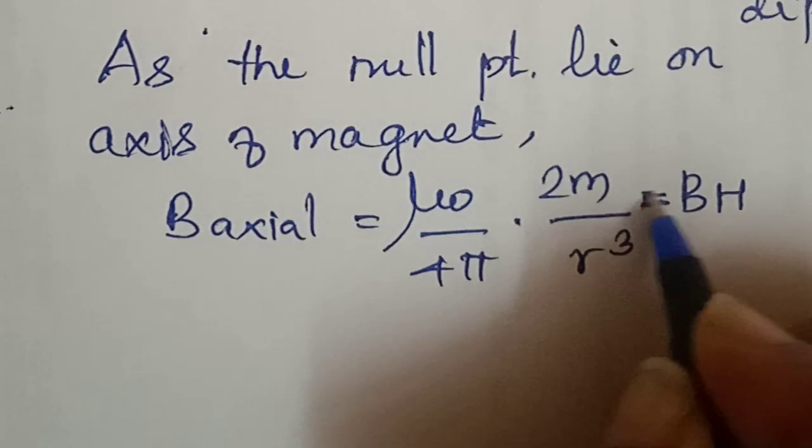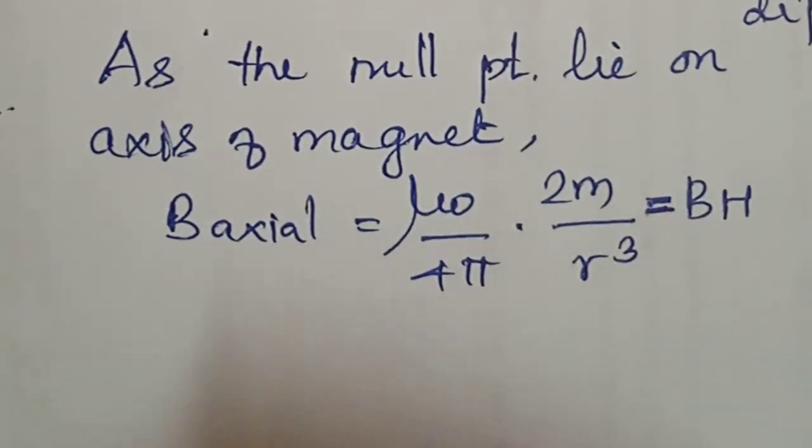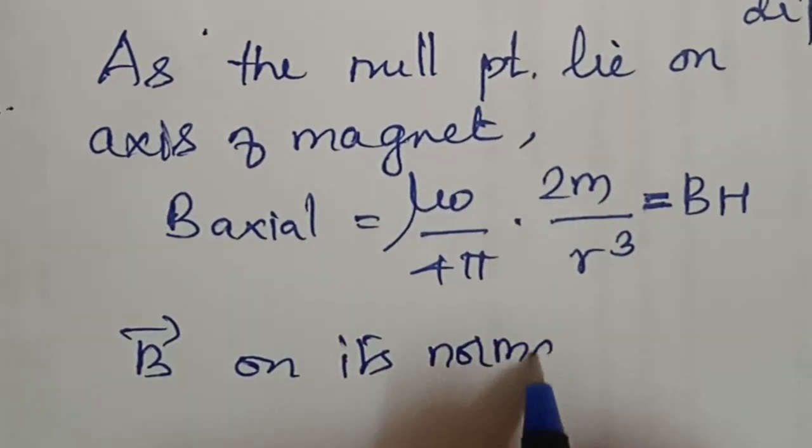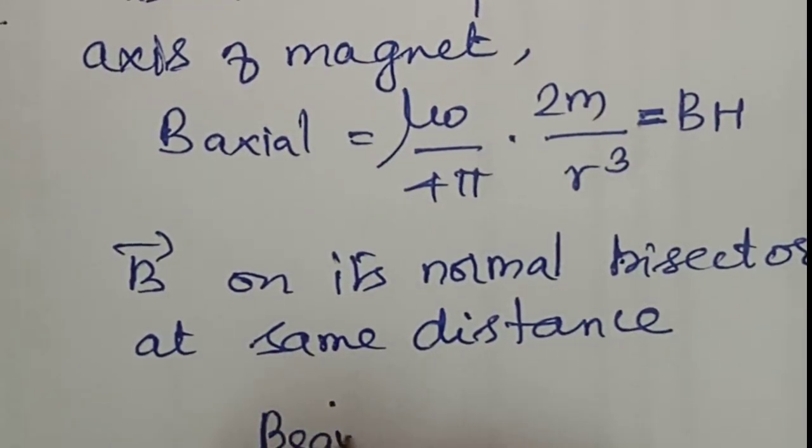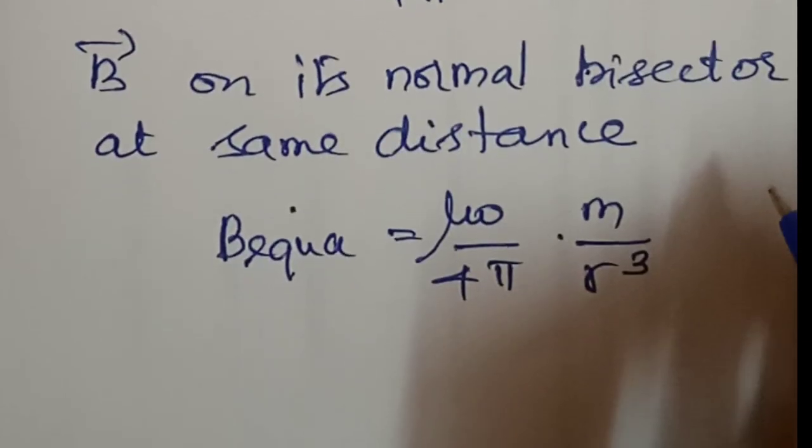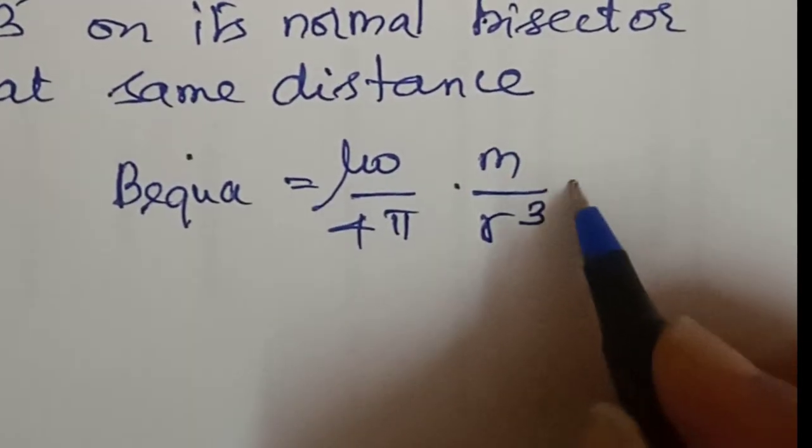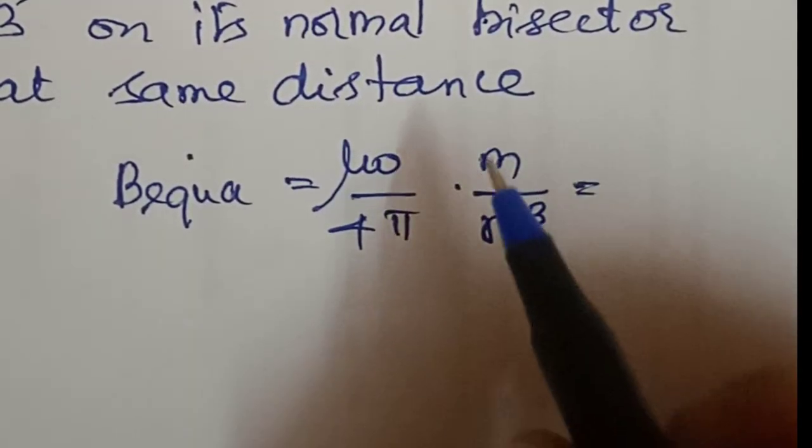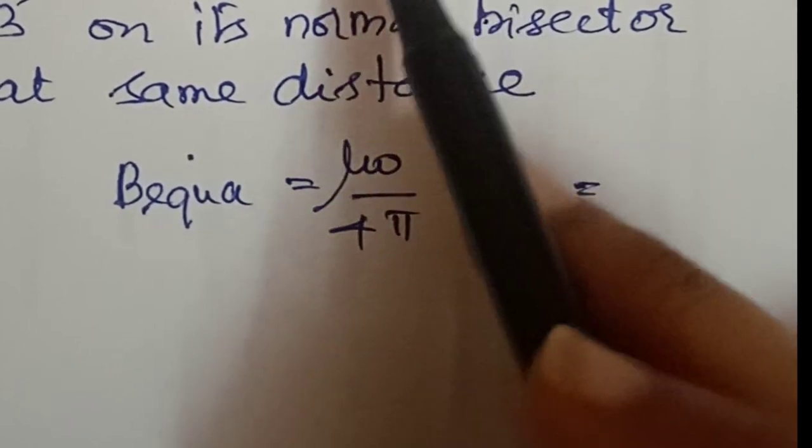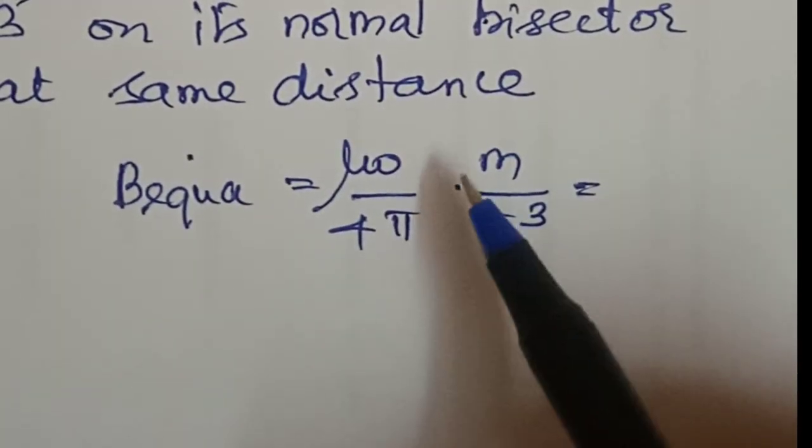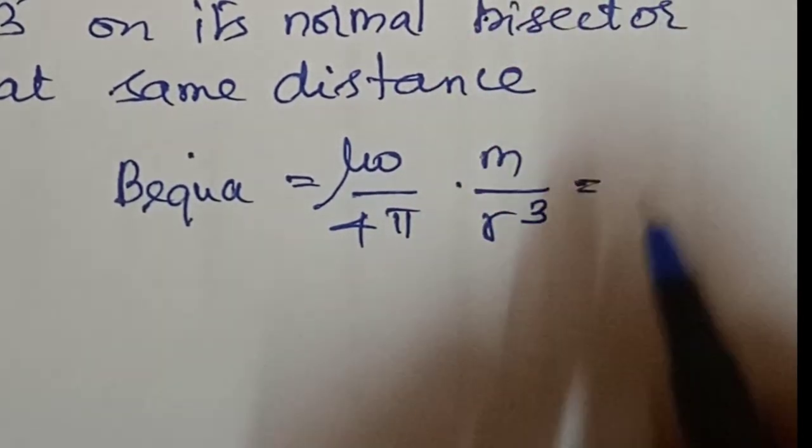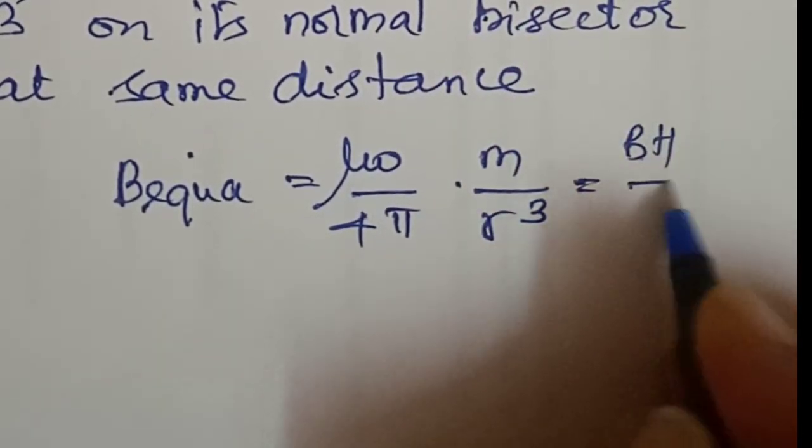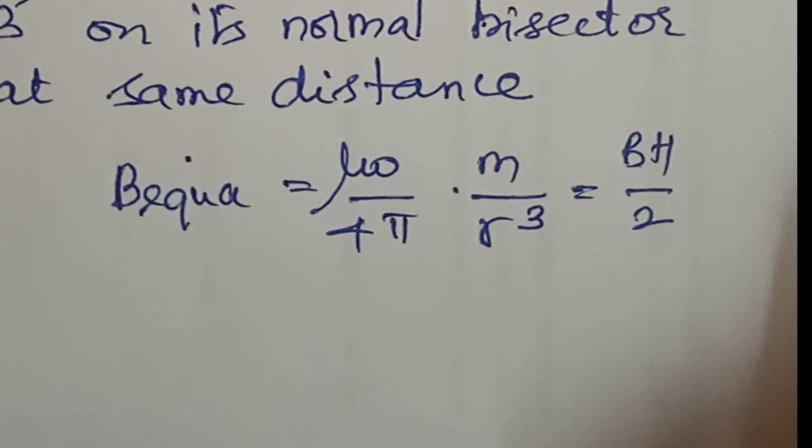If we take the normal bisector distance 14 centimeters, B equatorial formula is mu0 by 4pi into m by r cube. We take mu0 by 4pi into 2m by r cube which is BH. So mu0 by 4pi into m by r cube equals BH by 2.